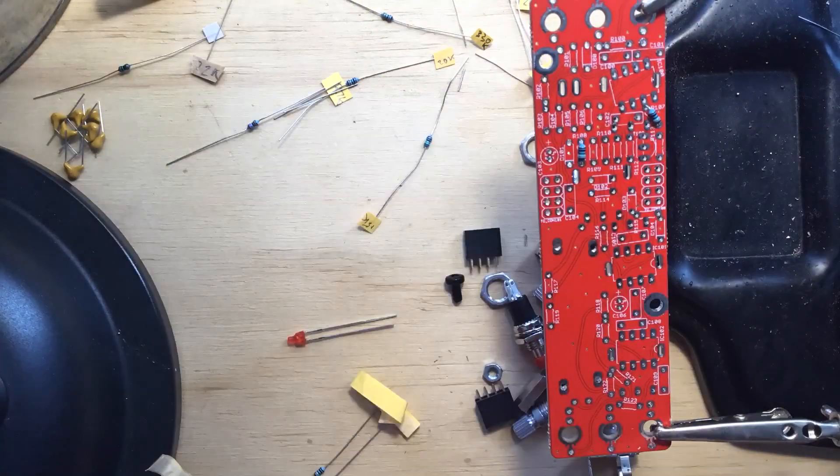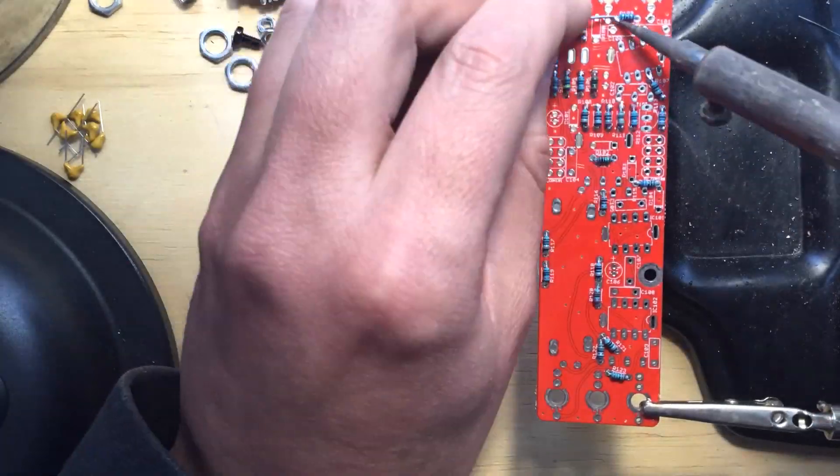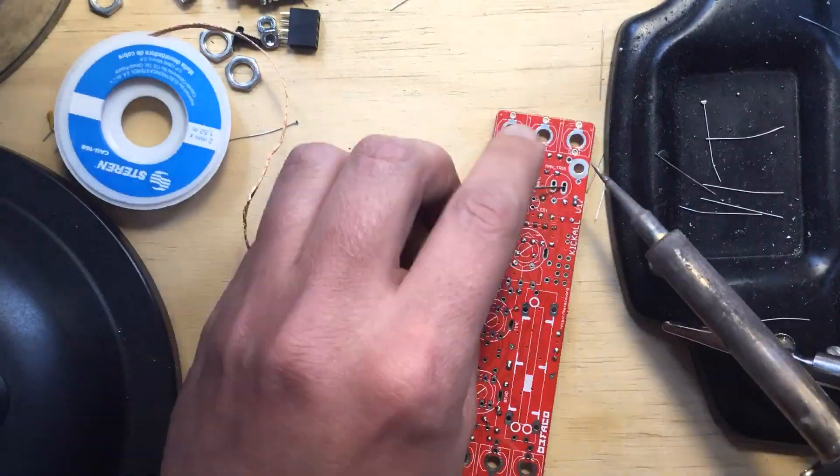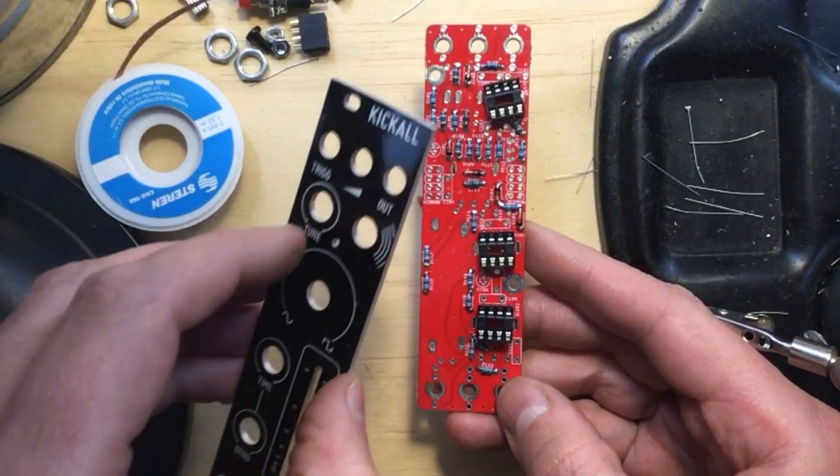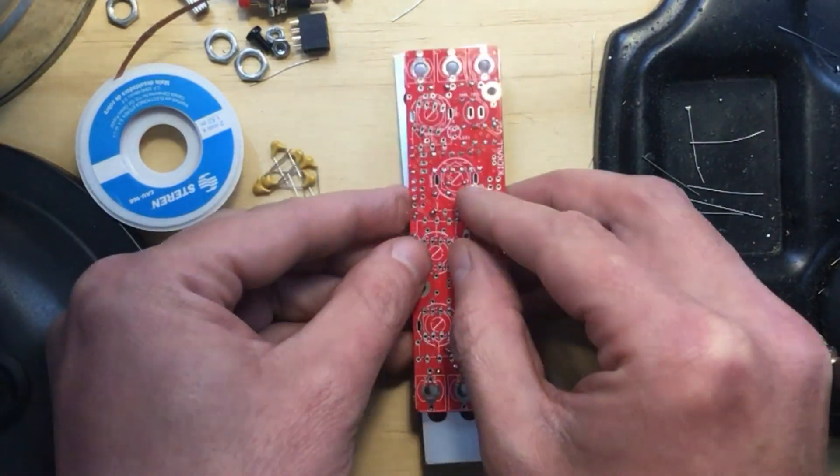Moving on to the control board, I again started with the resistors and diodes, soldering from above, trimming and touching up from behind. Then this time using the panel to hold them in place, I installed the IC sockets.